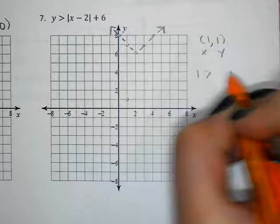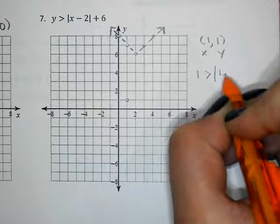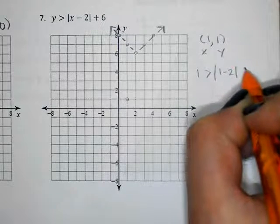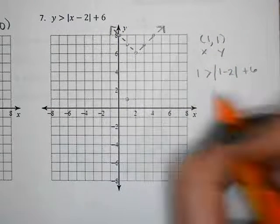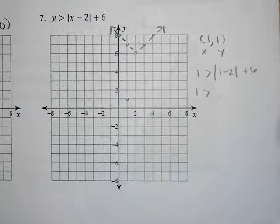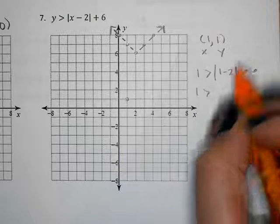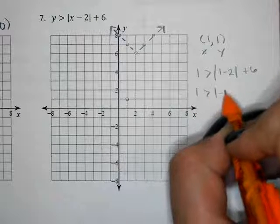So I got one is greater than the absolute value of one minus two plus six. The absolute value of one minus two - one minus two is negative one - so the absolute value of negative one.